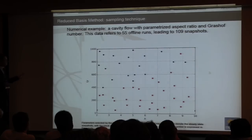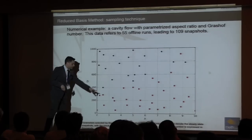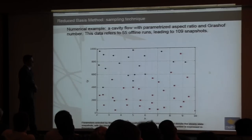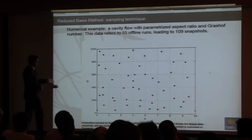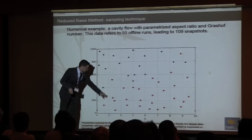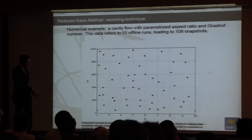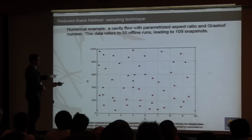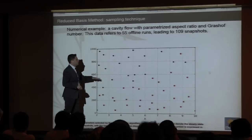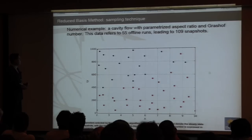An example shows the distribution of selected snapshots in the Grashof number versus aspect ratio parametric space. For lower Grashof numbers, steady snapshots are selected and geometry plays an important role, while time-dependent snapshots are selected at higher Grashof numbers.